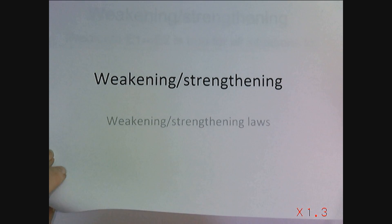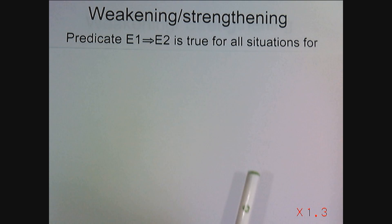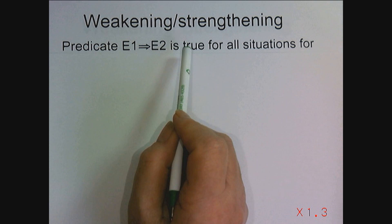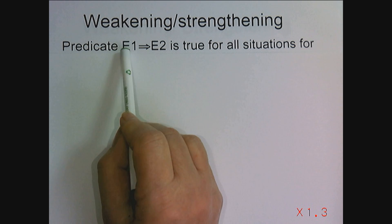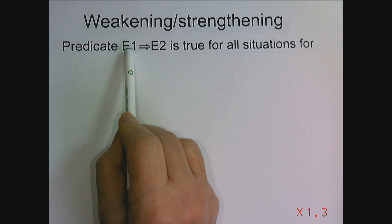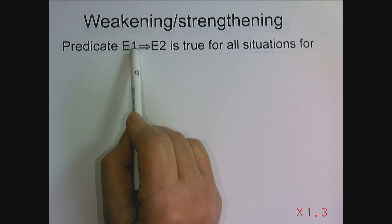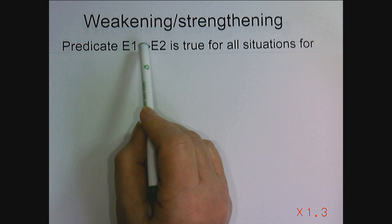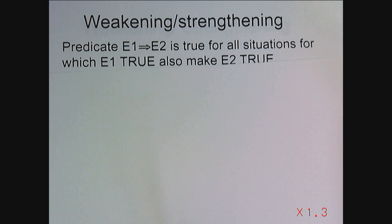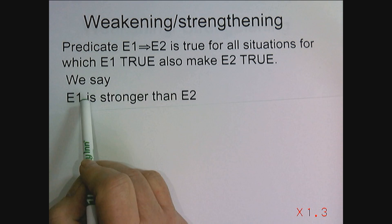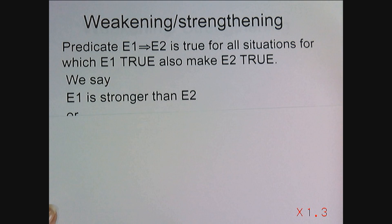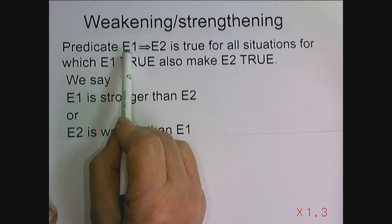In this video, we want to look at weakening and strengthening. In many situations, we have predicates involving implications. If the implication is true, that means every situation that makes E1 true has to also make E2 true. So if E1 is a predicate involving variables, any value that variable takes on that makes E1 true also must make E2 true in order for this implication to be true. We would say that E1 is stronger than E2 if the implication holds, or we say E2 is weaker than E1.